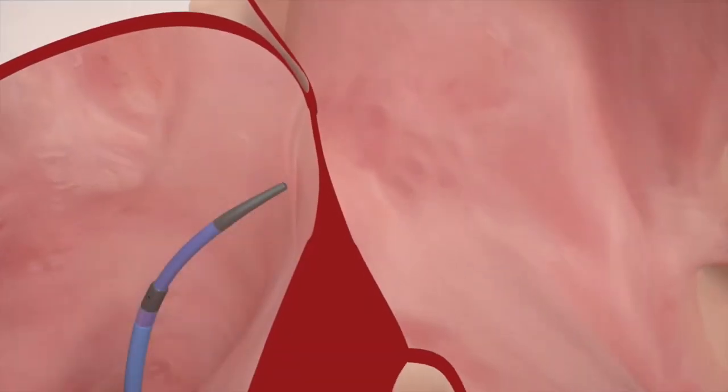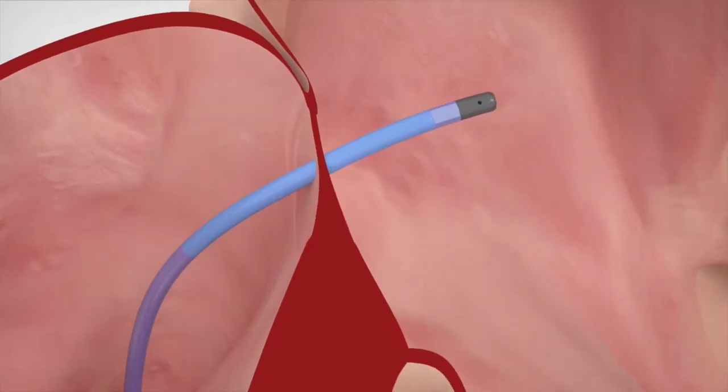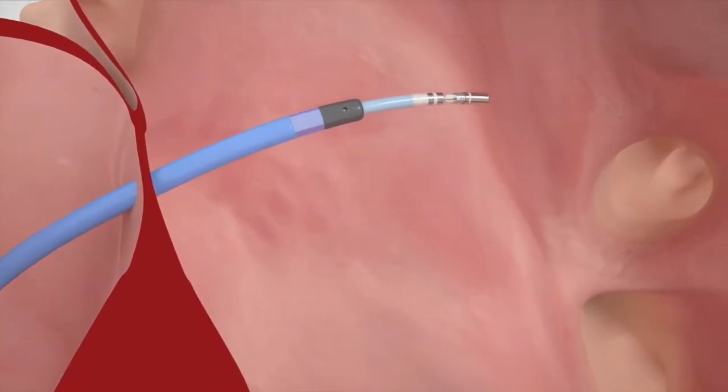Once the catheter reaches the upper left chamber of the heart, an advanced 3D map guides the controlled application of contact force therapy around the openings of the pulmonary veins.